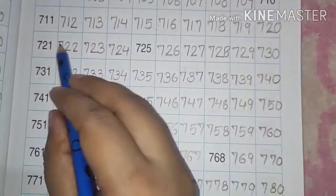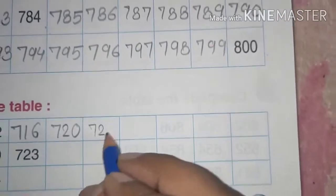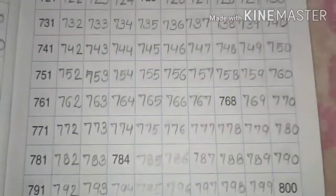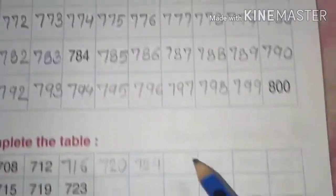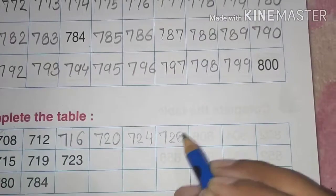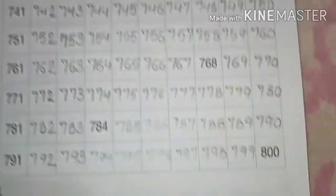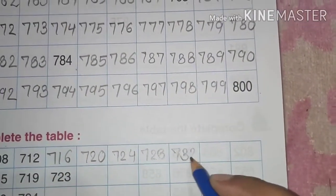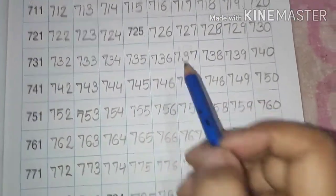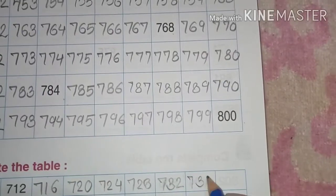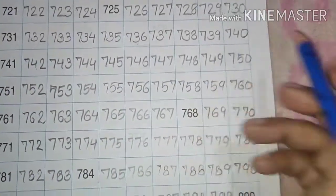720 ke baad mein, 1, 2, 3, 4. That is 724. Okay 724 ke baad mein, 1, 2, 3, 4. 728. So this is 728. Then 728 ke baad ne 1, 2, 3, 4. 4th number is 732. 732, 1, 2, 3, 4. So this is 736. 736, 1, 2, 3, 4. Now we have 740.